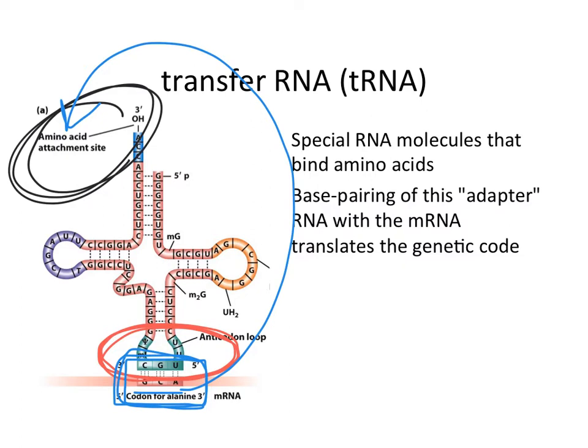Whatever amino acid is connected to that transfer RNA is what gets incorporated into the protein at that spot. This is where translation actually happens — the transfer RNA. It's the one molecule where an RNA is actually physically connected to an amino acid. Base pairing in the anticodon loop — tRNA and mRNA base paired together — that's where translation happens.